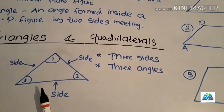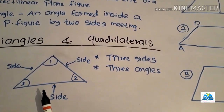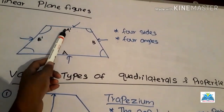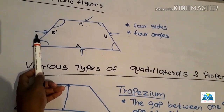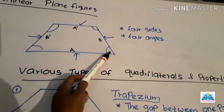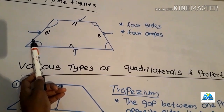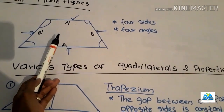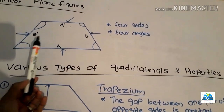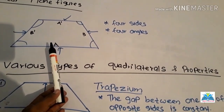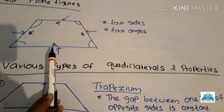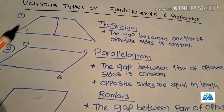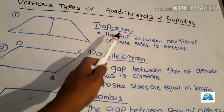Now we'll see what is a quadrilateral. A quadrilateral has four sides and four angles. There are so many plane figures you may see with four sides and four angles, and they have some special names. We'll see what are the various types of quadrilaterals and their properties.